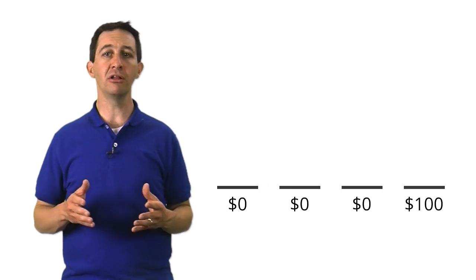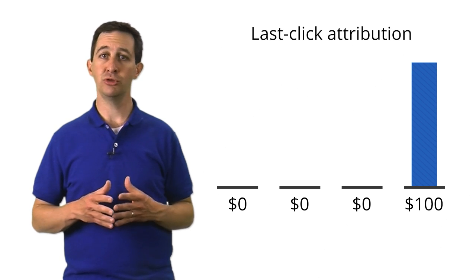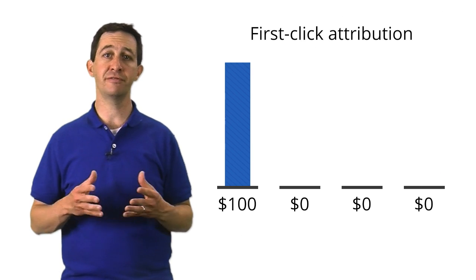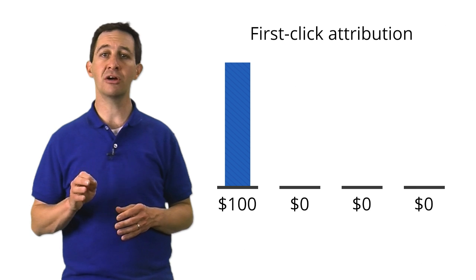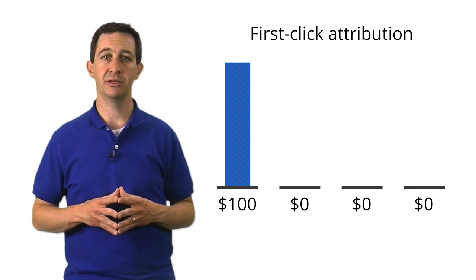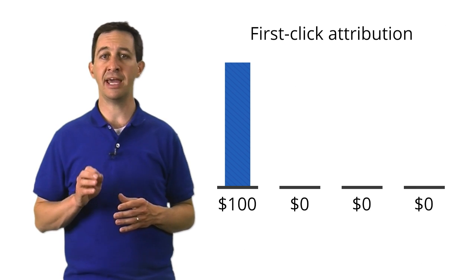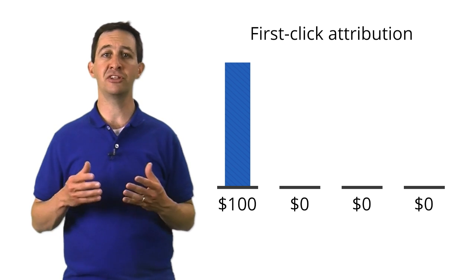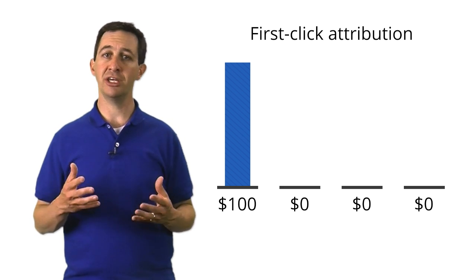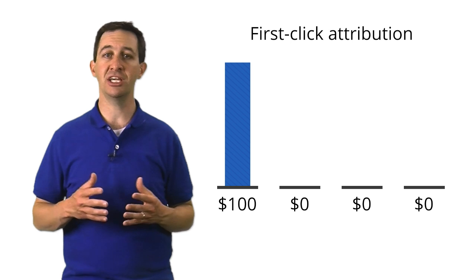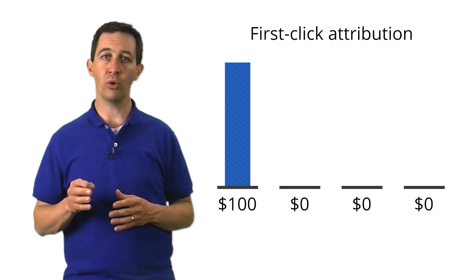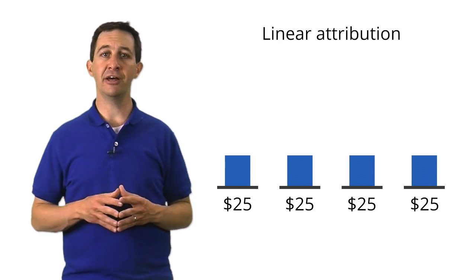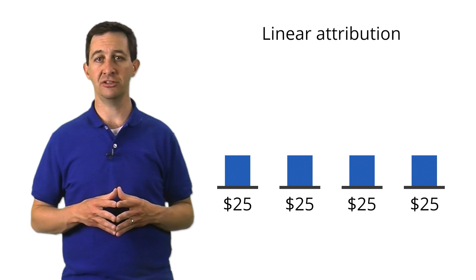There are many different ways to assign value to channels. Rather than assign all of the value to the last channel, you might want to assign all of the value to the first channel — the one that started the user on the customer journey. This is called first-click attribution. Or you might assign a little bit of value to each of the assisting channels in the customer journey.